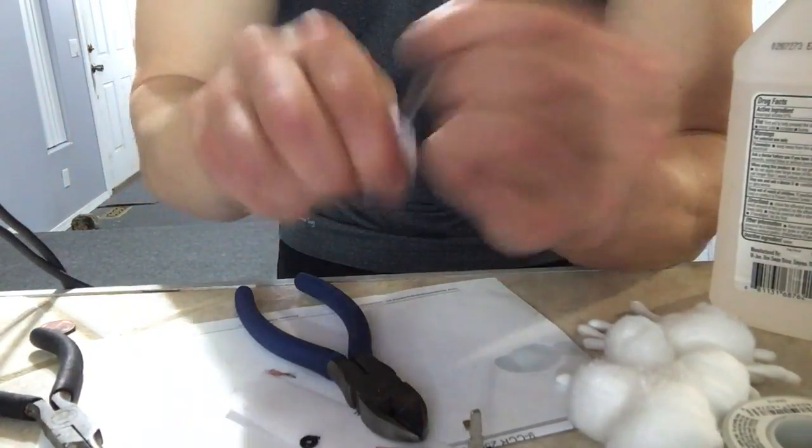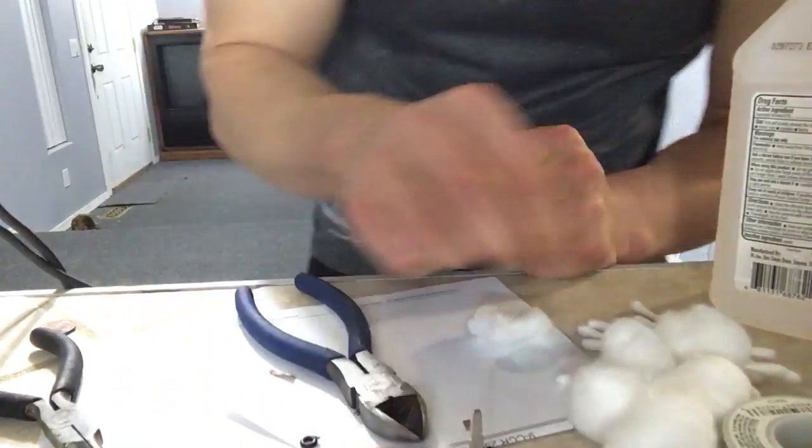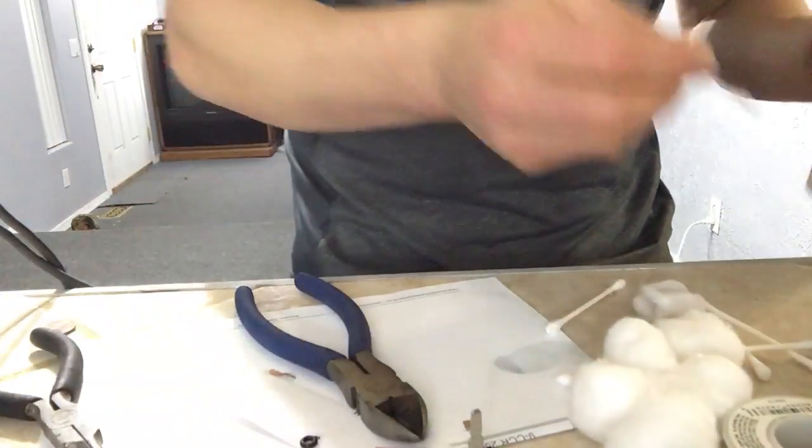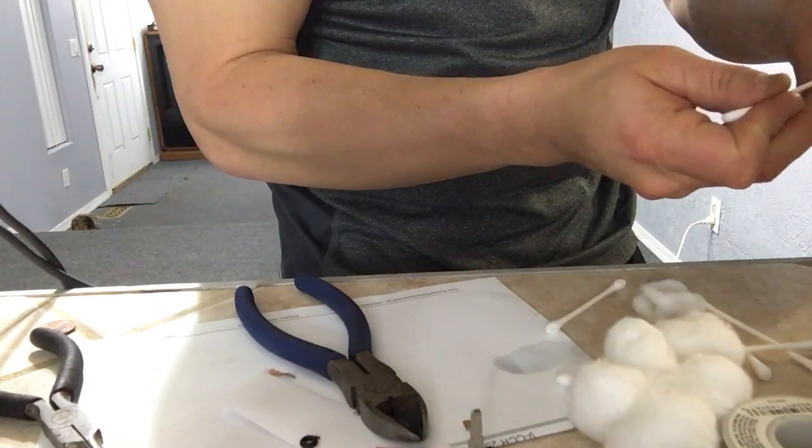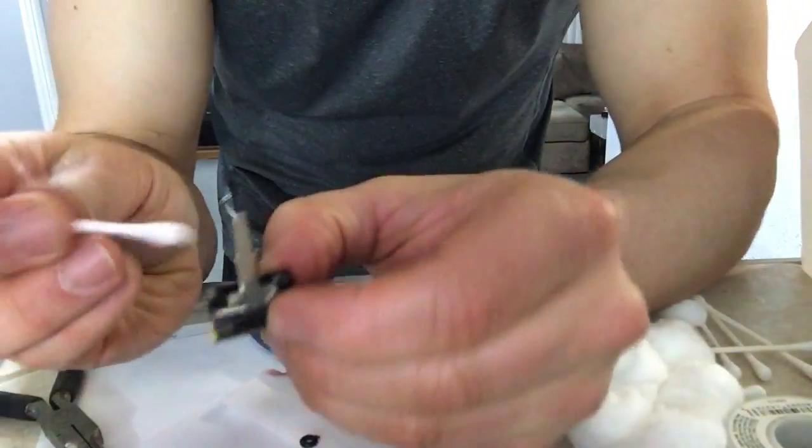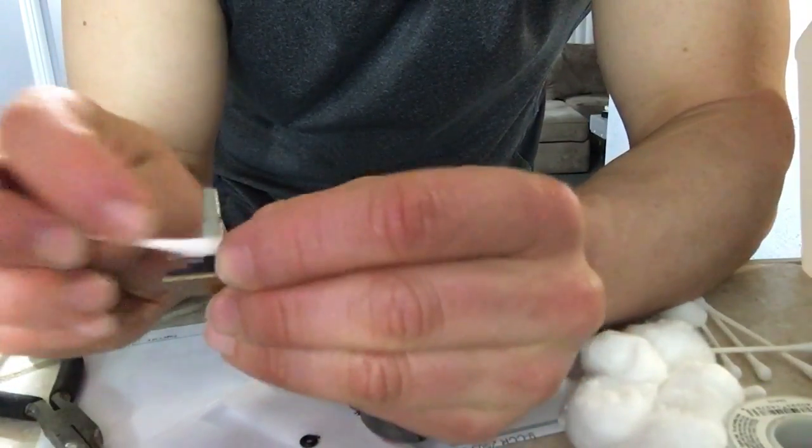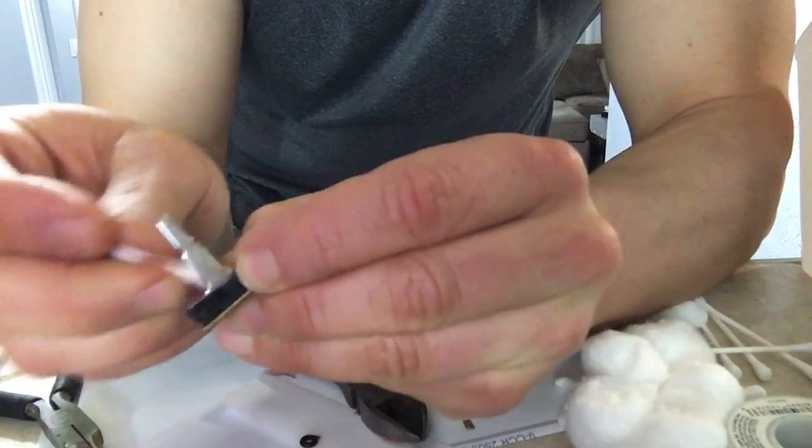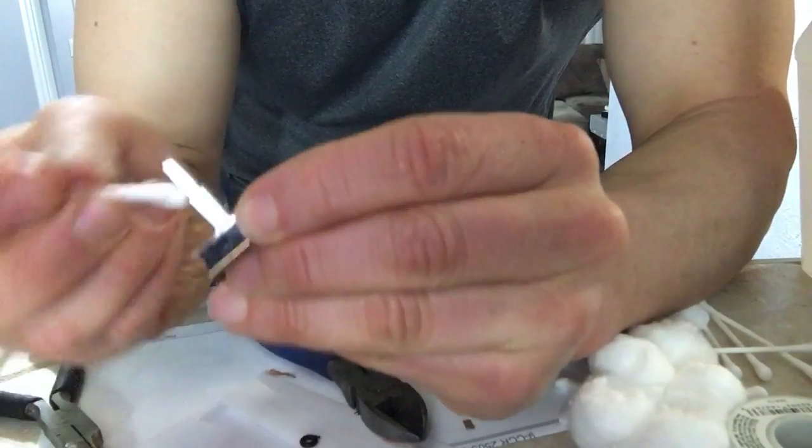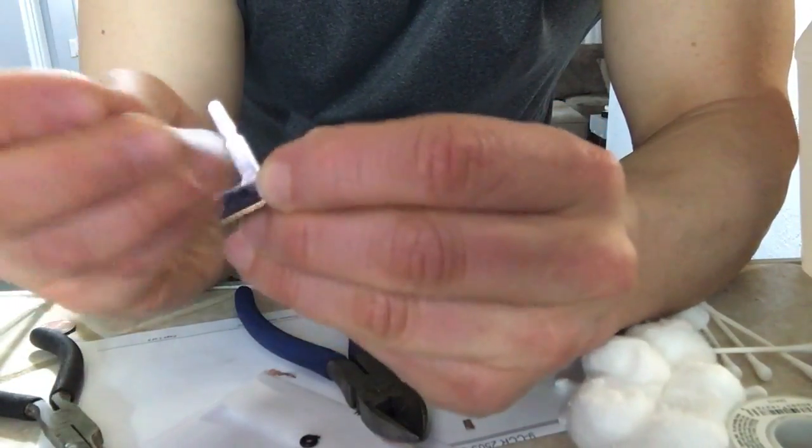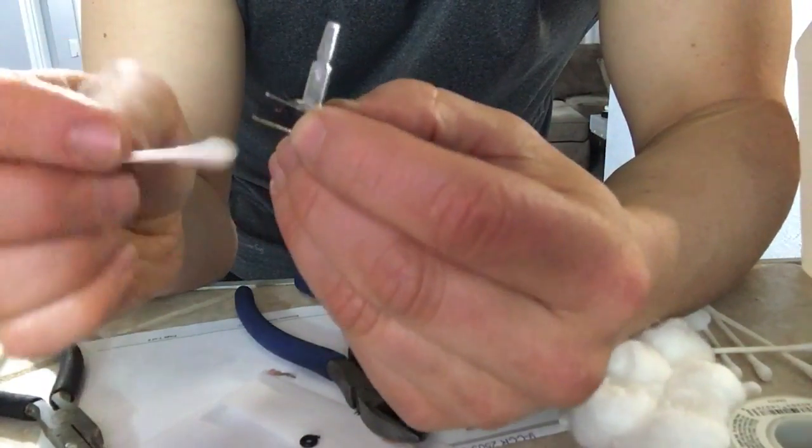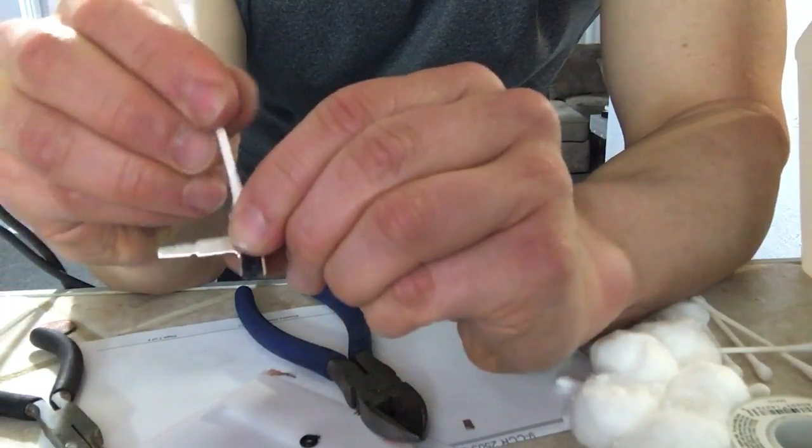Now we're going to use this q-tip, and then we're going to clean off all of that grease that they put in here. We don't like that factory grease. We don't want it on there, we don't need it on there. It just makes everything slower, so we're going to clean all of that out of there.